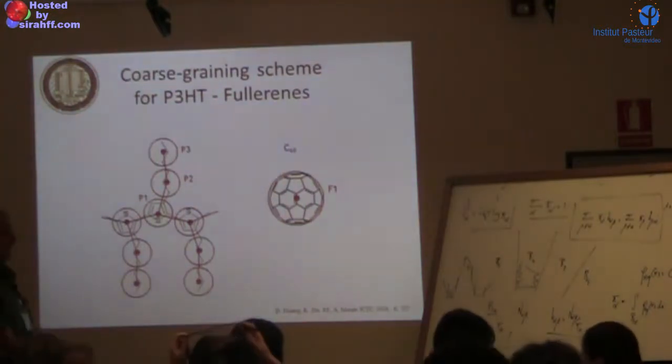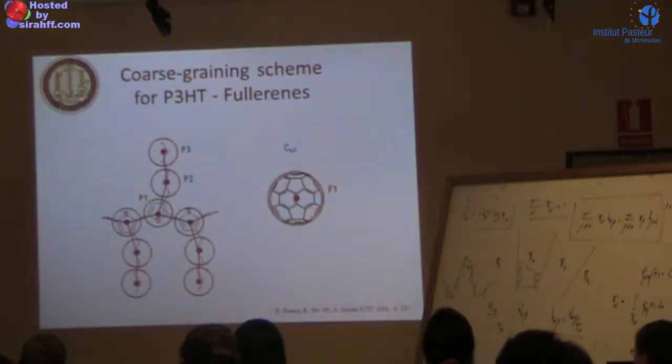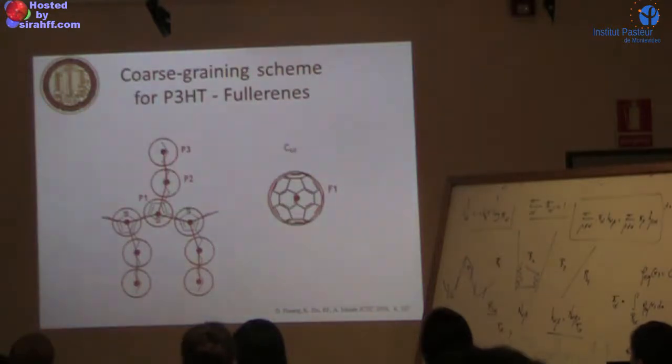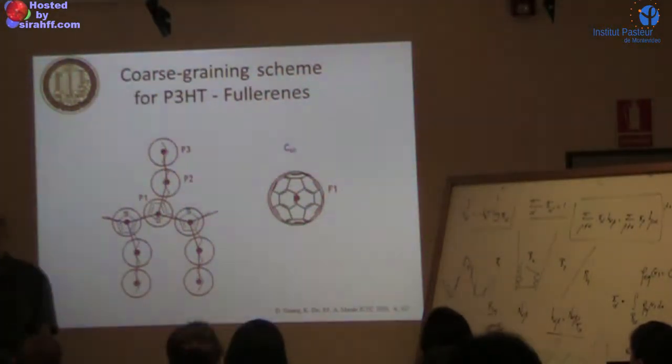When we look atomistically, the atomistics make sense. We did quantum chemistry for atomistics. Now we want to do coarse-graining because we have to go to scales of 100 nanometers, which atomistically is not really possible.